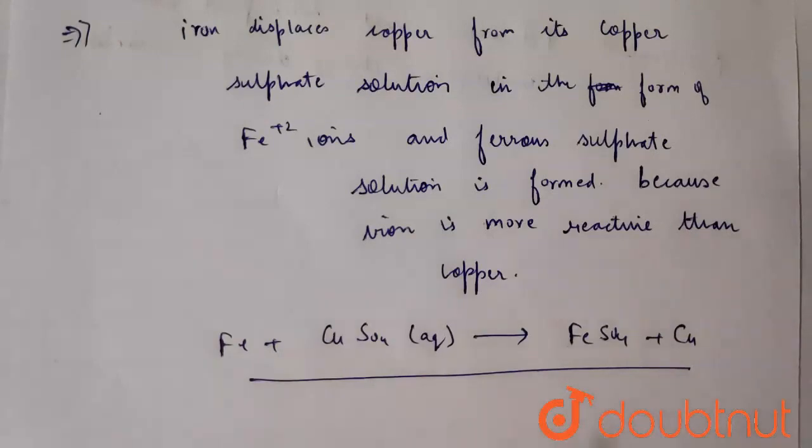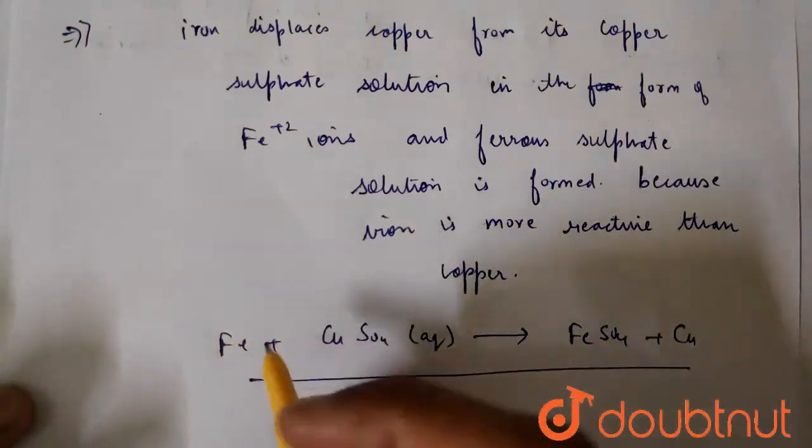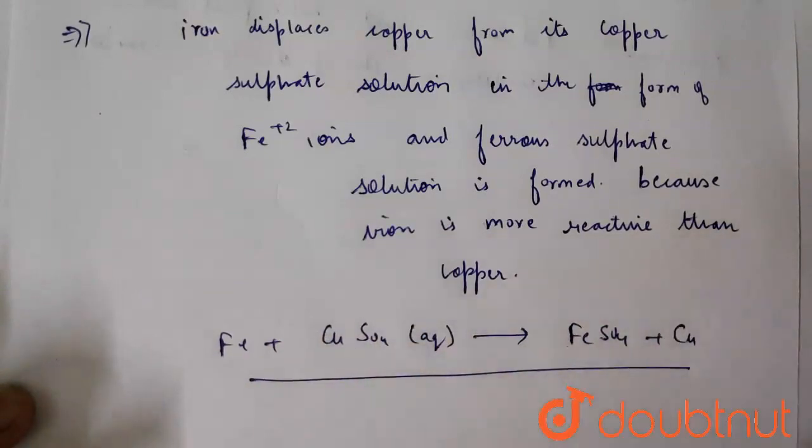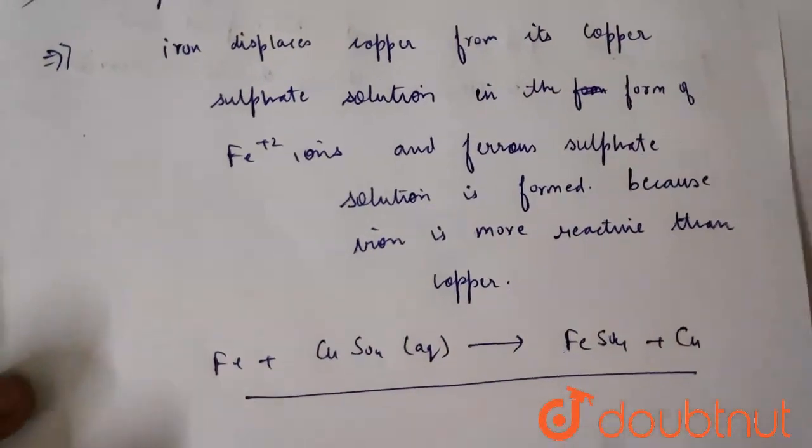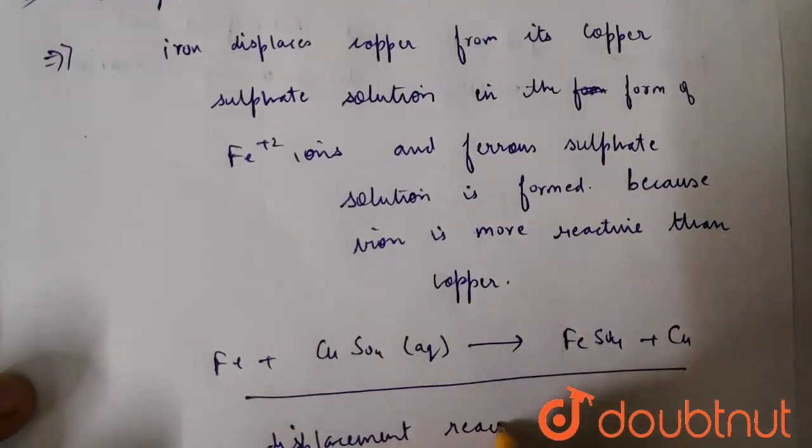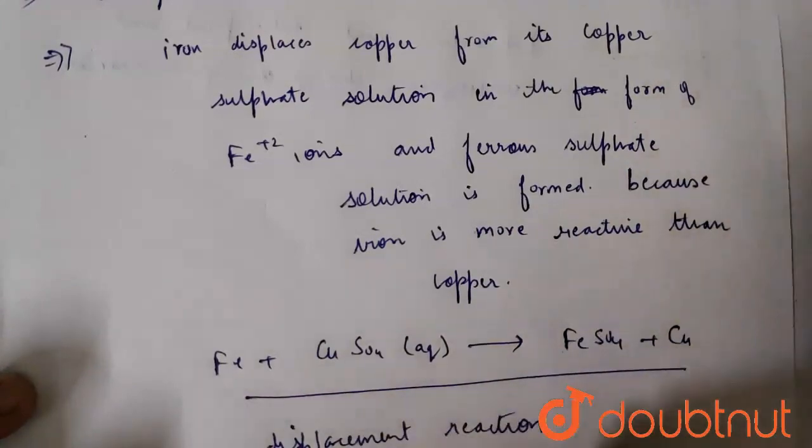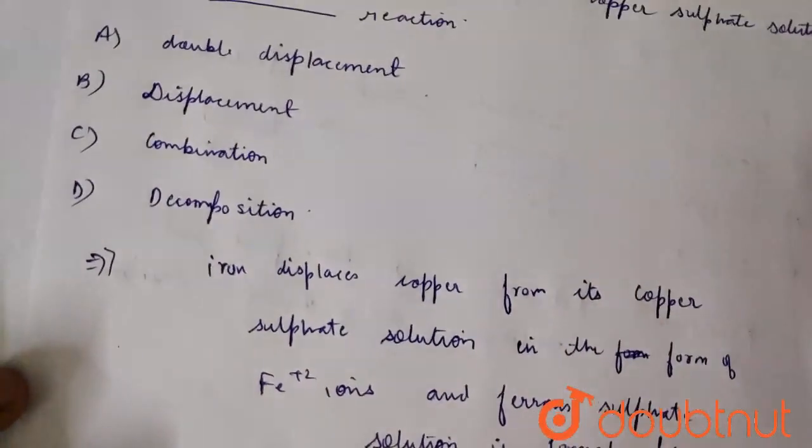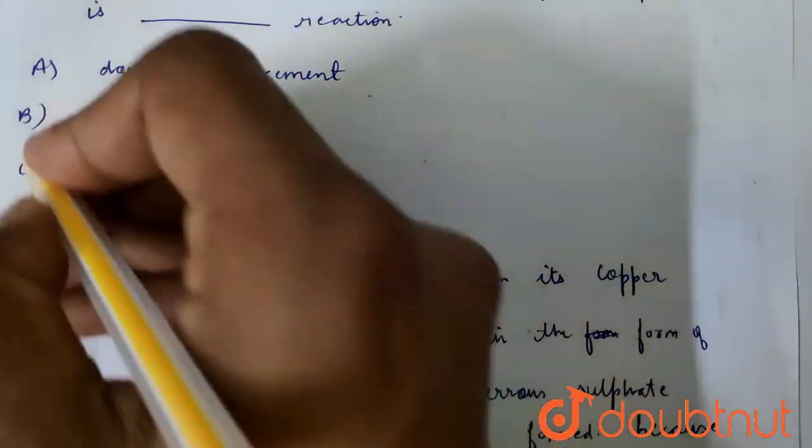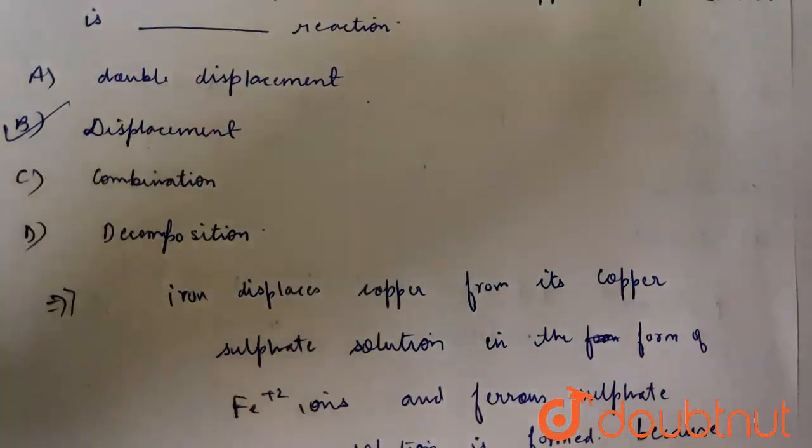But in this case only single ion is replaced, only copper is replaced, so it's not double displacement. This is simply a displacement reaction. No combination reaction, no decomposition reaction, no double displacement. So option B is the correct answer.